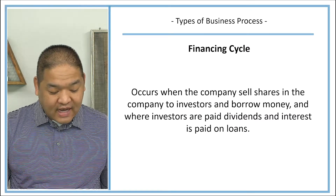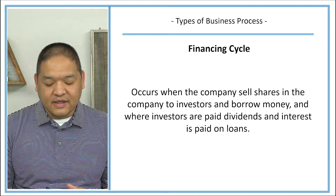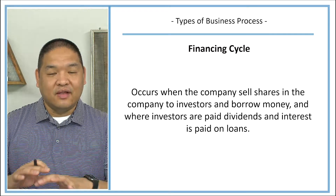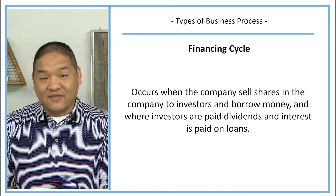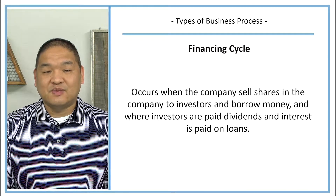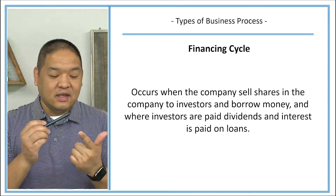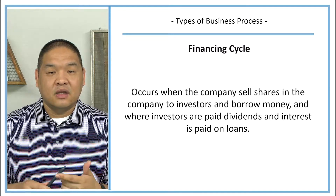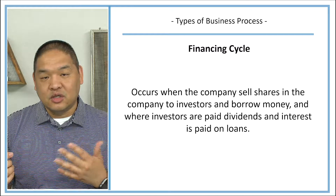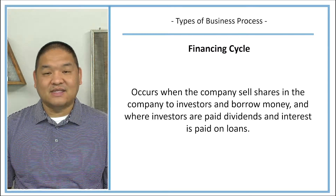The financing cycle occurs when the company sells shares to investors or borrows money, and where investors are paid dividends and interest is paid on loans. This is really what I call cash management — specifically, external sources of cash management. We're looking at selling securities such as stock in the company, as well as issuing debt by borrowing money.